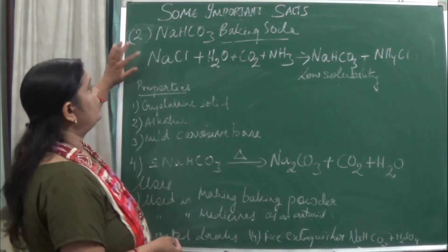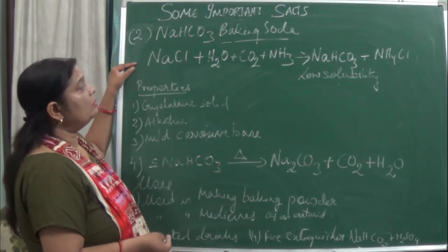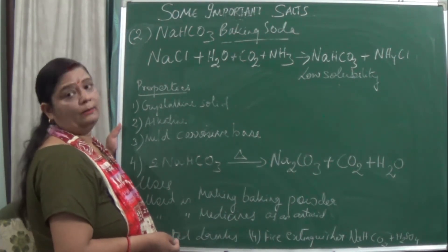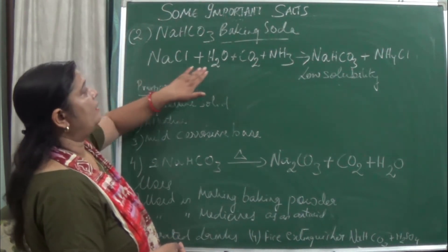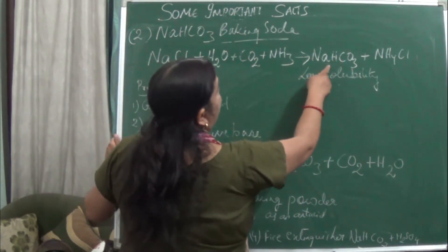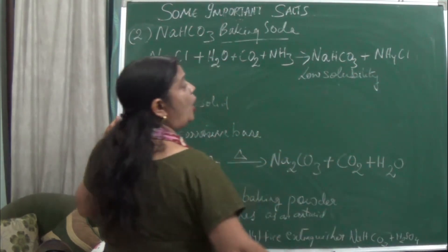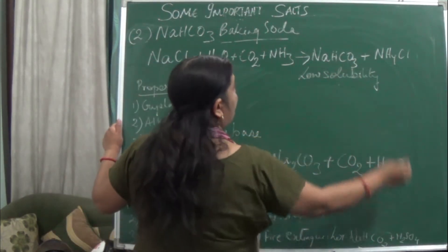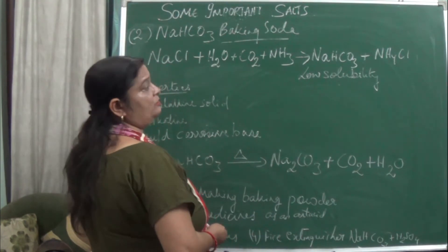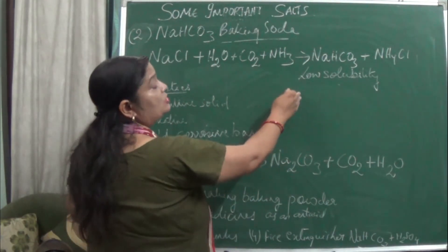Baking soda is prepared using sodium chloride as raw material. Sodium chloride plus water, with carbon dioxide and ammonia passed through it, gives sodium hydrogen carbonate (NaHCO3) and ammonium chloride (NH4Cl). Sodium hydrogen carbonate has low solubility in solution, while ammonium chloride has high solubility — so NaHCO3 precipitates out and can be filtered to obtain baking soda.